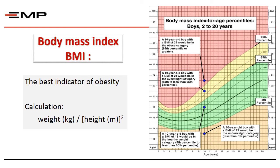We come now to the body mass index, which is the best indicator of obesity. It is calculated from a formula using the weight in kilograms divided by the height in meters squared. We plot the number on the body mass index chart as usual to know if it is normal or not. This covers the measurements of weight, height, body proportions, growth velocity, and body mass index, and we will continue the growth assessment parameters in the third segment of this lecture.